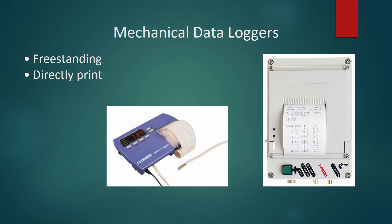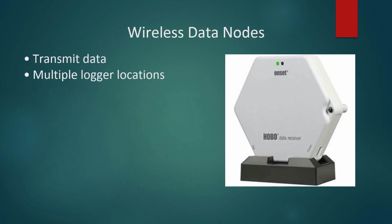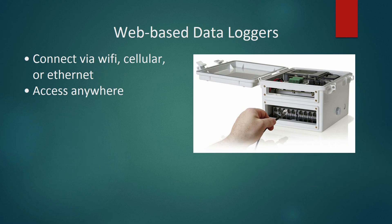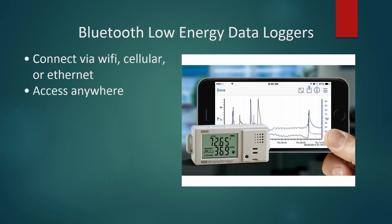Mechanical data loggers are free-standing and print directly from the logger as data is received. Standalone data loggers are easy to set up and deploy — portable, compact, and relatively inexpensive. There are two models: internal sensor models, which monitor at the logger's location, and external sensor models, which can monitor a distance away. The gathered data is then transferred to a computer using a USB interface. Wireless data nodes eliminate manual retrieval by transmitting data from dozens of points to a central computer. Web-based data loggers are connected through wi-fi, cellular, or ethernet connections, allowing the user to obtain data from anywhere with internet access. Some data loggers use radio frequency identification (RFID) to transmit data to the user in real time. The final type is a Bluetooth low-energy data logger, which can connect with a mobile device within an approximate distance from the logger.